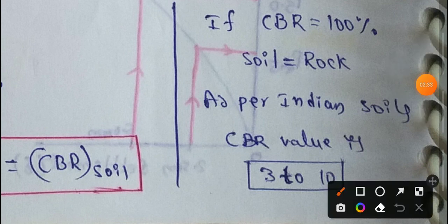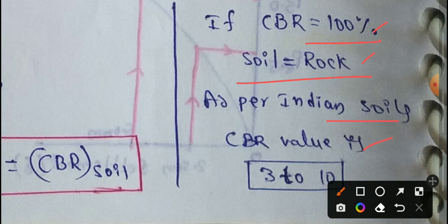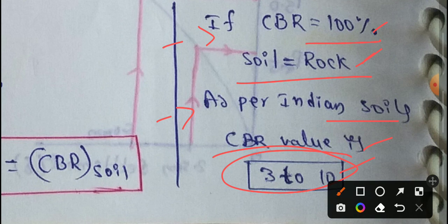An important note: if the CBR value is 100%, that represents crushed stone standard. For Indian soils, the normal CBR value ranges from 3% to 10%.